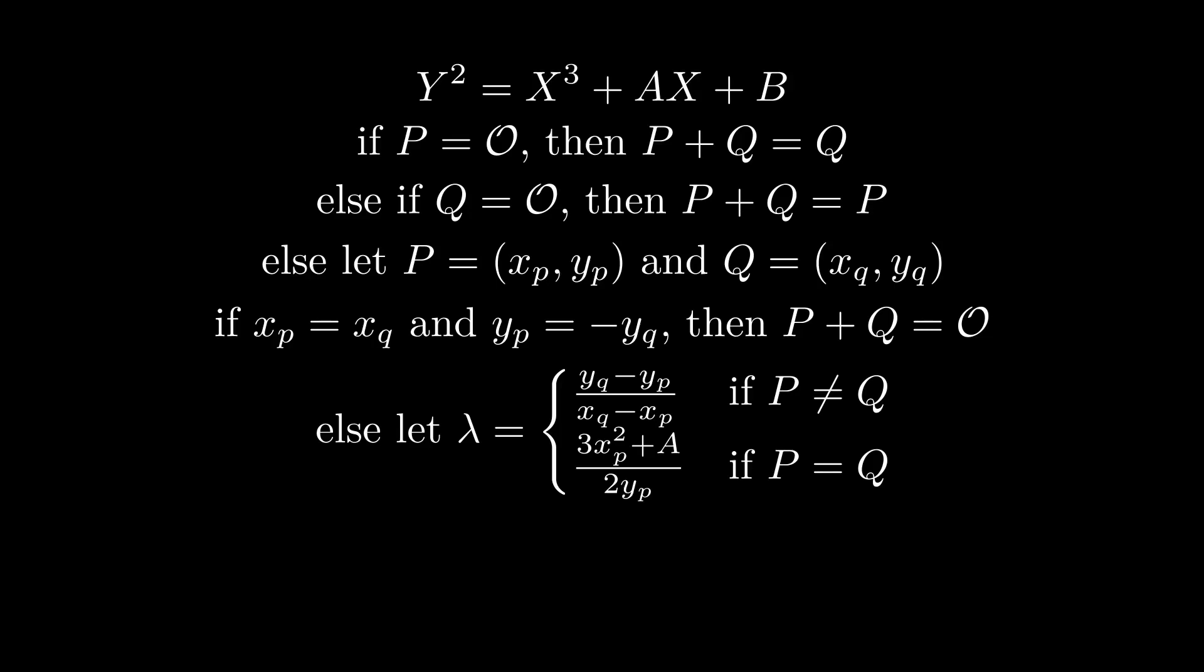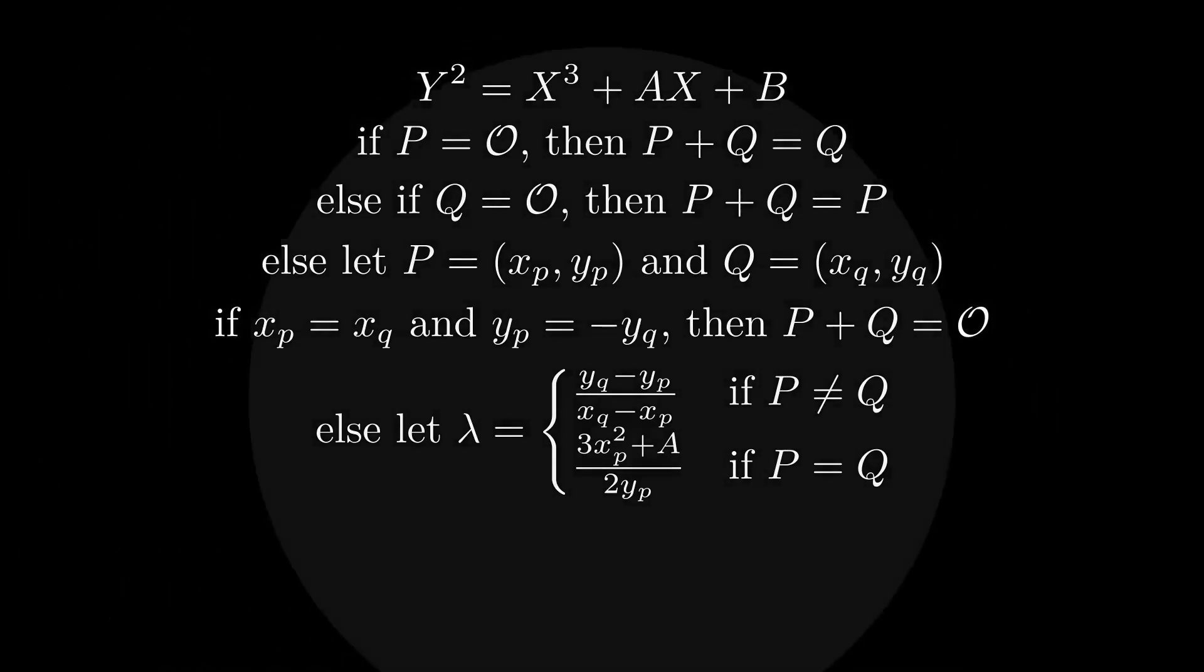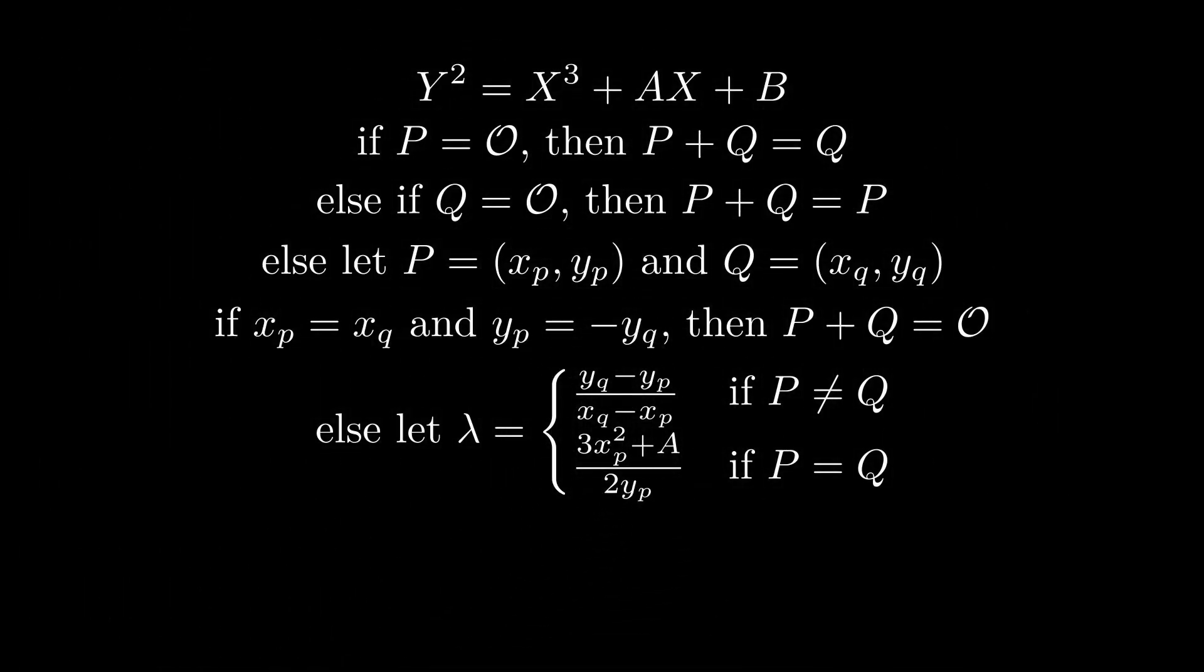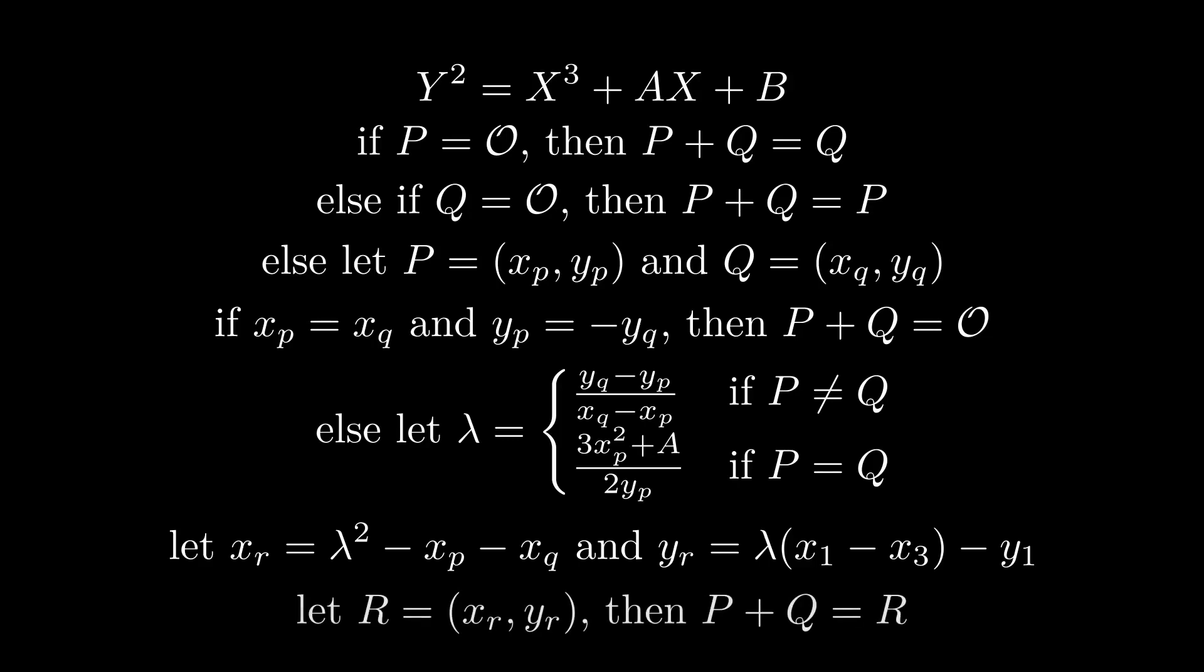We get the second case if the two points are the same. Then we need to find the slope of the tangent line at that point. Look at the equation above, and if you know calculus, you should be able to derive the formula for the slope of the tangent line. Then we can use this equation to find the coordinates of the third point that the line intersects.